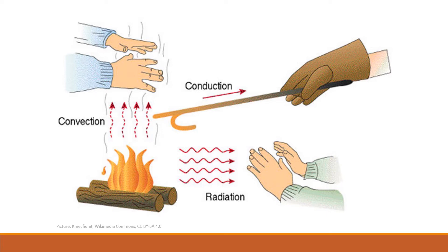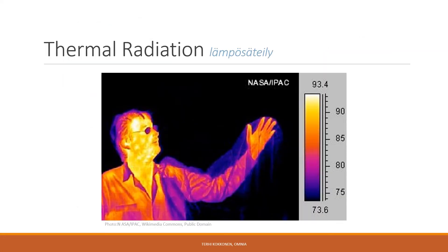Heat can be transferred by conduction, by convection, and by radiation. Heat transfer through radiation takes place in form of electromagnetic waves. Thermal radiation is emitted by all objects above absolute zero. At room temperature, most of the emission is in the infrared spectrum. A thermographic camera creates an image using infrared radiation.